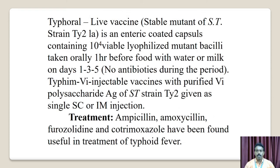Typhoral — live vaccines: unstable mutants of S. Typhi strain Ty21a — enteric-coated capsules containing 10⁴ viable attenuated mutant vesicles, taken orally one hour before food with water or milk on days 1, 3, and 5. No antibiotics during the period. Injectable vaccine: purified Vi polysaccharide antigen of S. Typhi strain Ty2, given as a single subcutaneous or intramuscular injection.